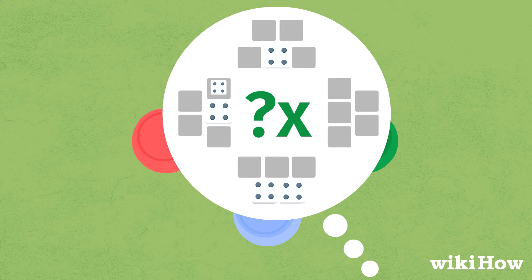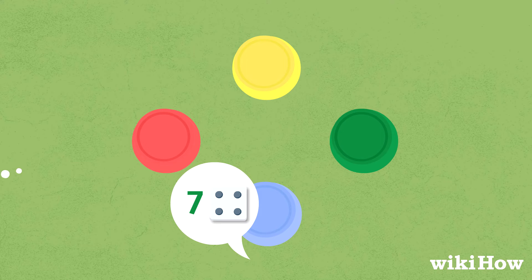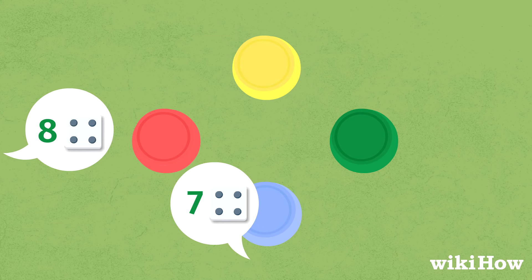After the first player bids, the player to their left bids next. They can bid a higher quantity of the same face, or bid the same quantity of a higher face.